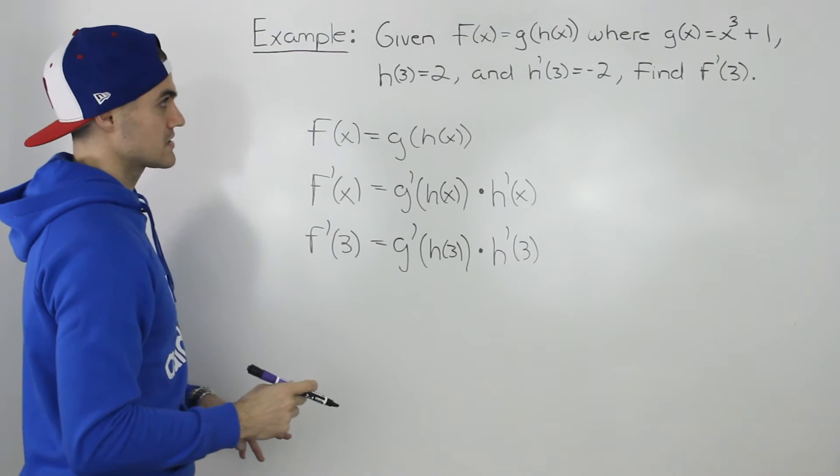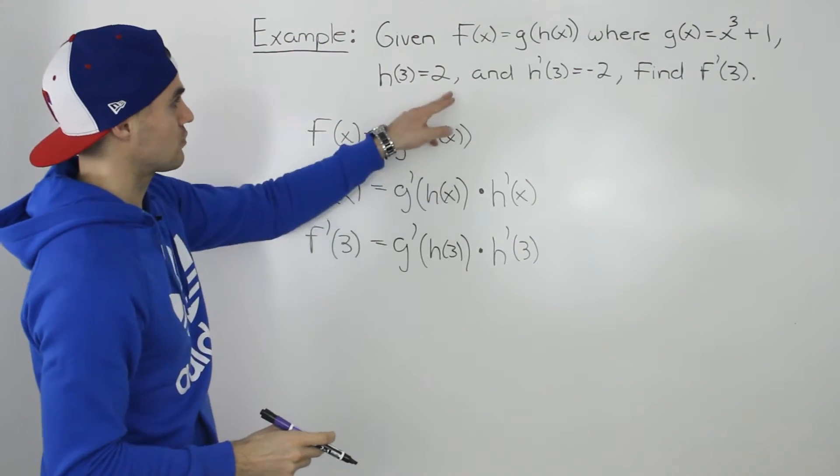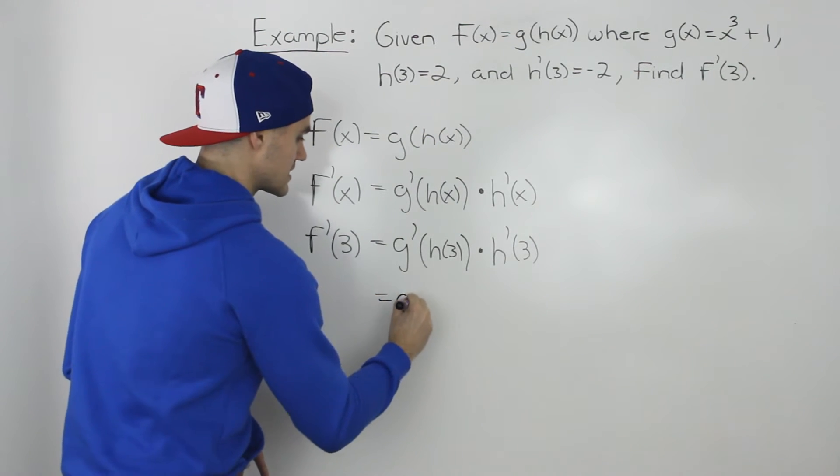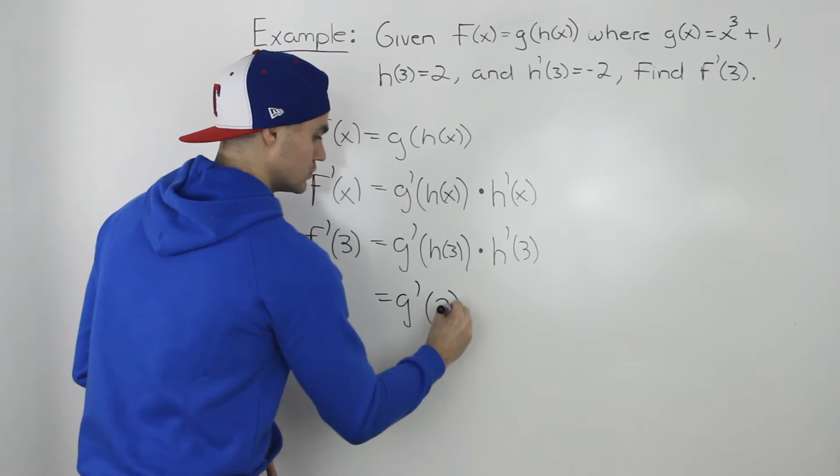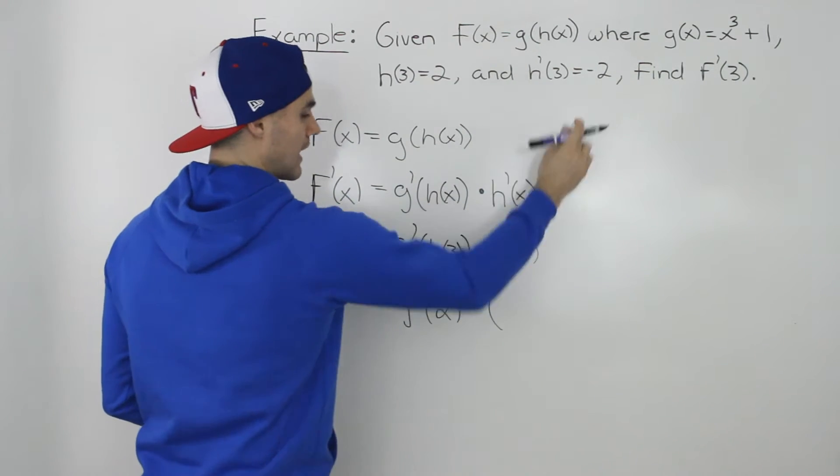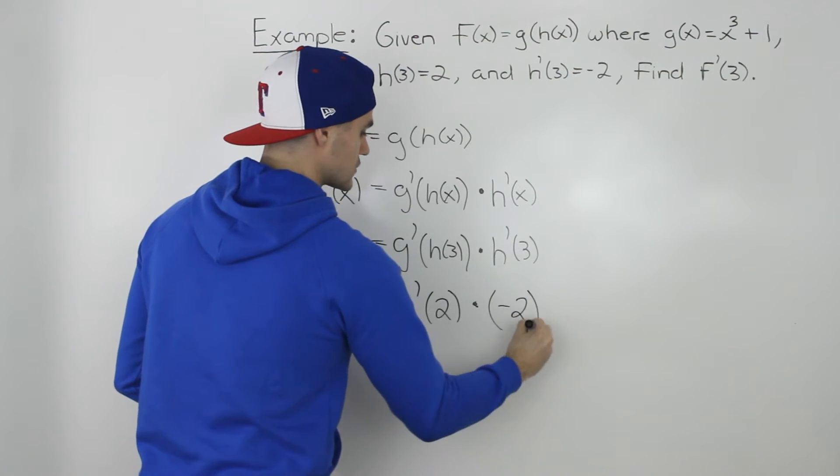Now we're getting somewhere because h(3) is given as a value of 2. We can rewrite this as g'(2), and h'(3) is given as a value of -2.